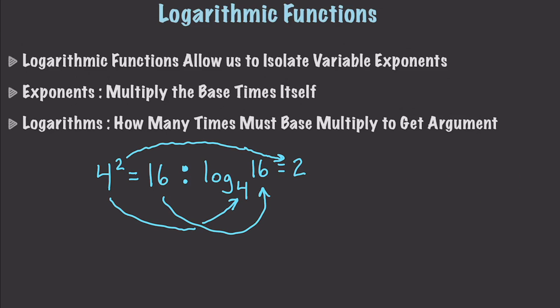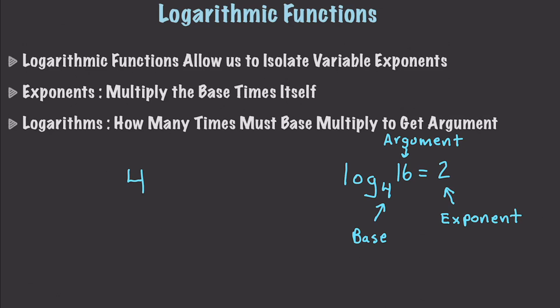And it's also important to understand the names for these different equations. So, if we have log base 4, 16 is equal to 2, this guy up here is known as the argument, this is known as the exponent, and this is known as our base. Likewise, if we are working with exponents, such as 4 squared, this is known as our base, and this, of course, is known as our exponent.